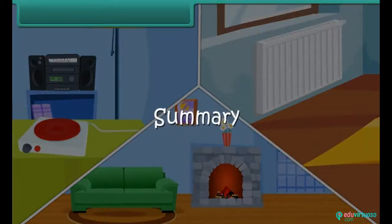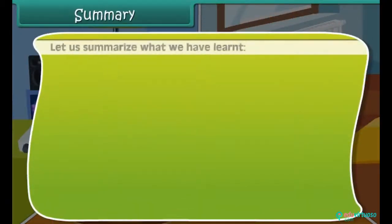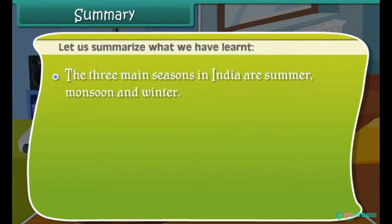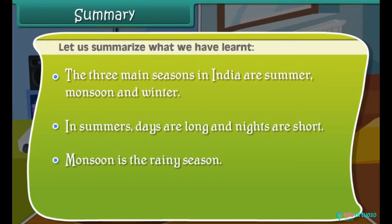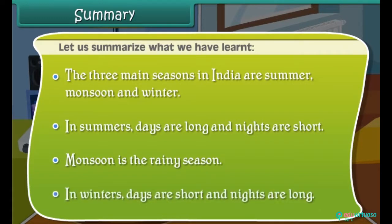Let us summarize what we have learnt. The three main seasons in India are Summer, Monsoon, and Winter. In summers, days are long and nights are short. Monsoon is the rainy season. In winters, days are short and nights are long.